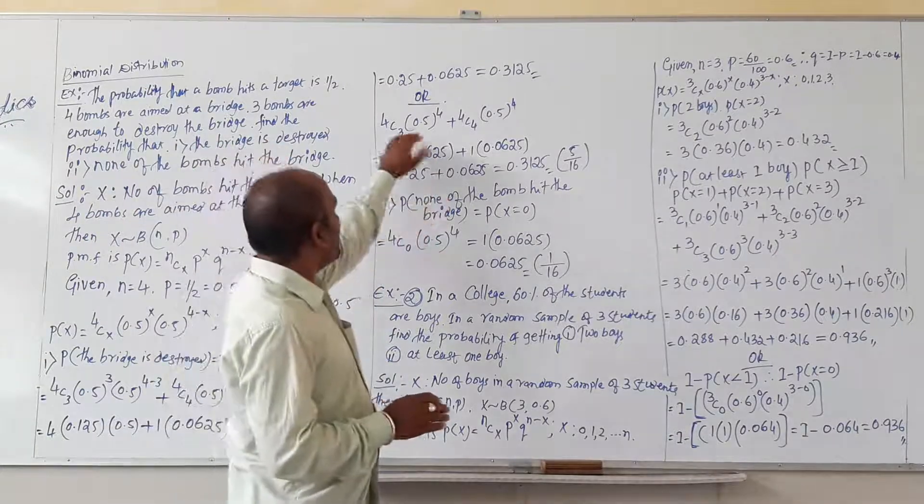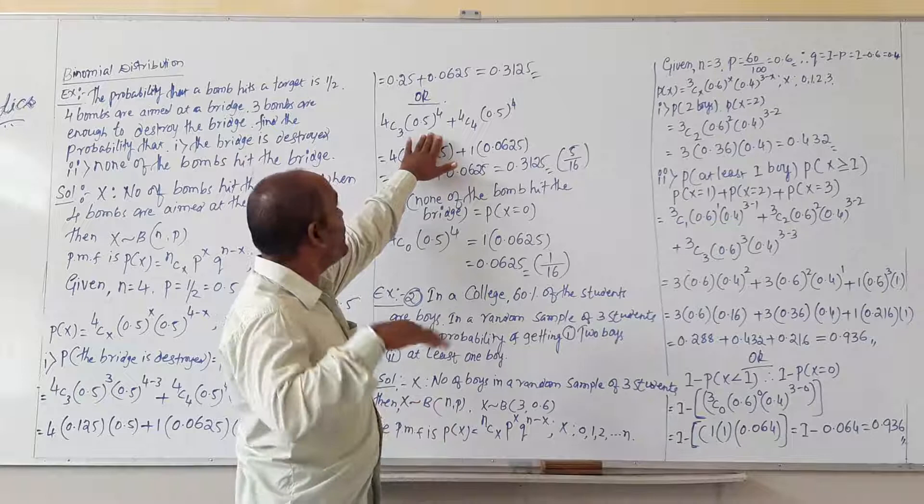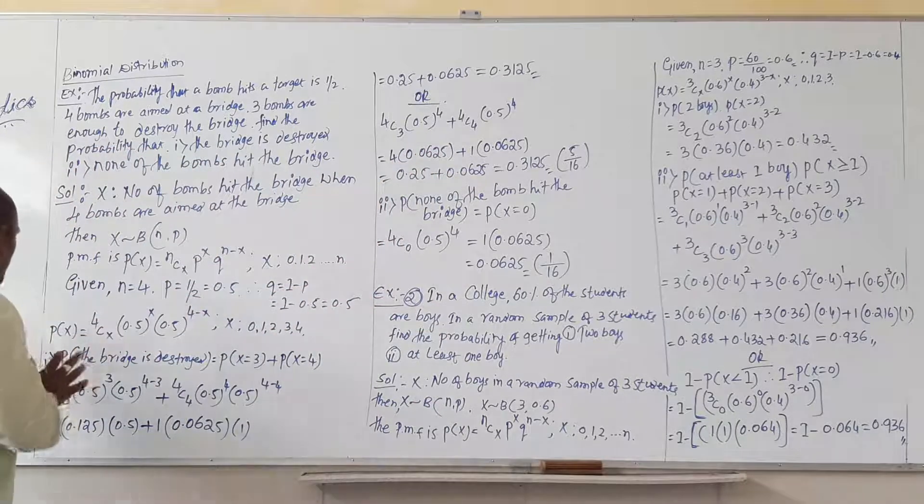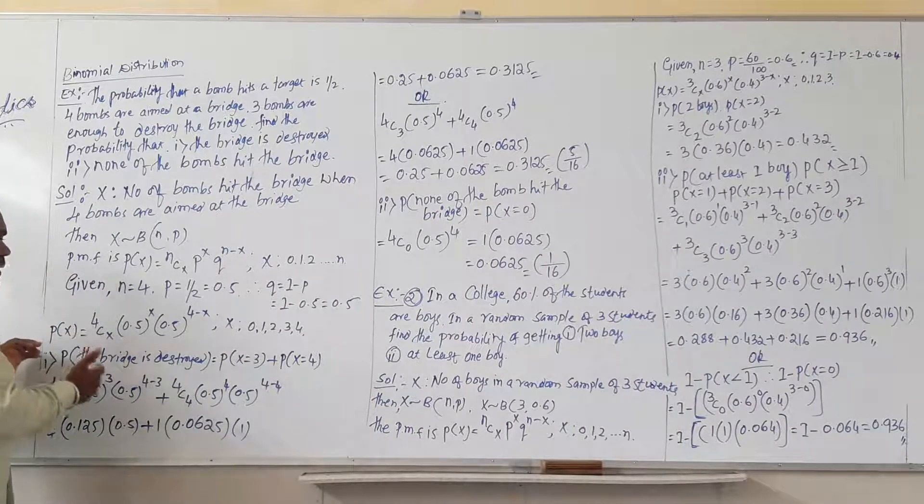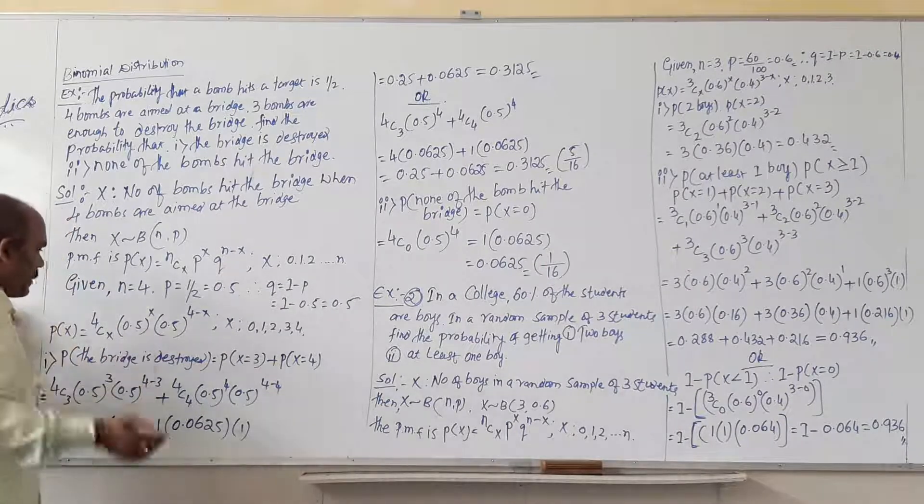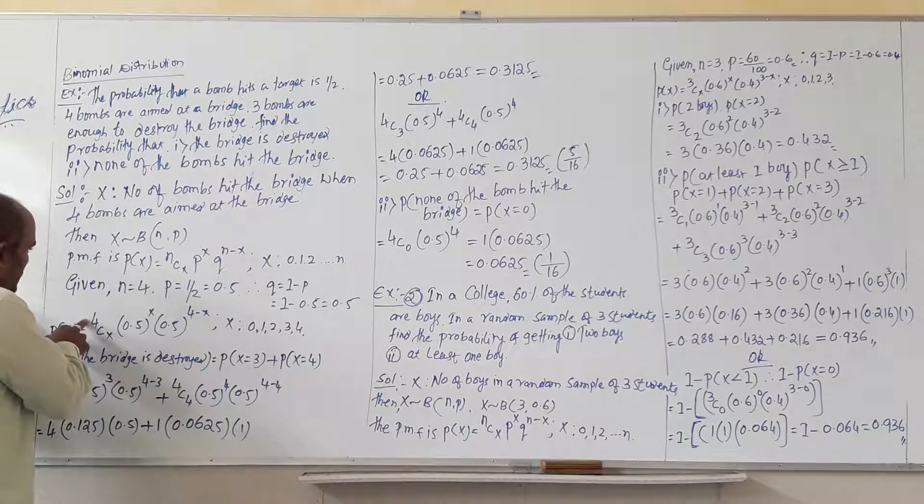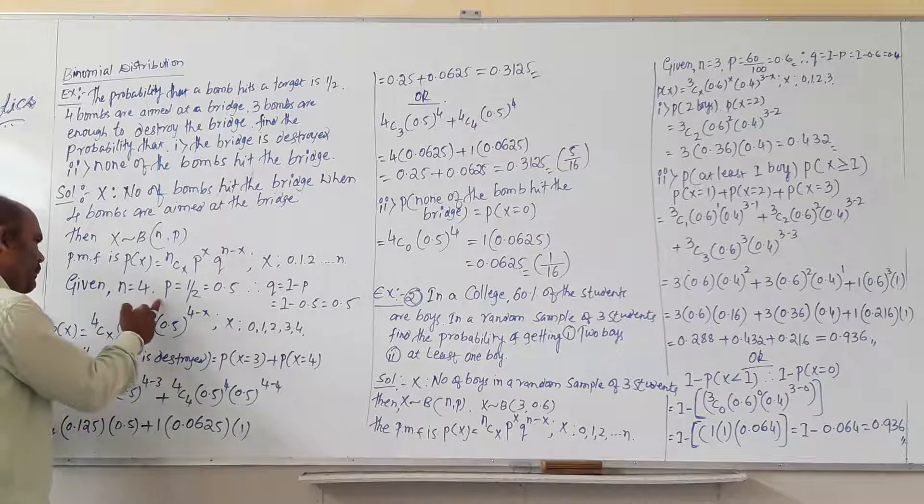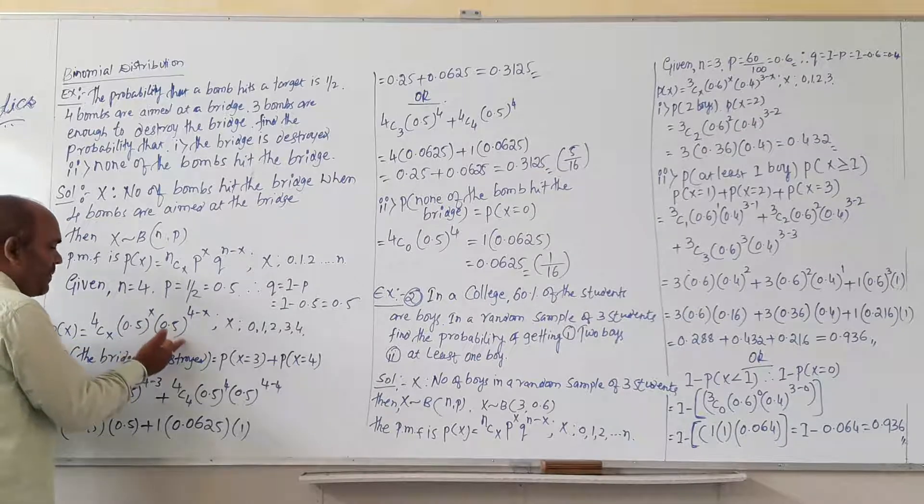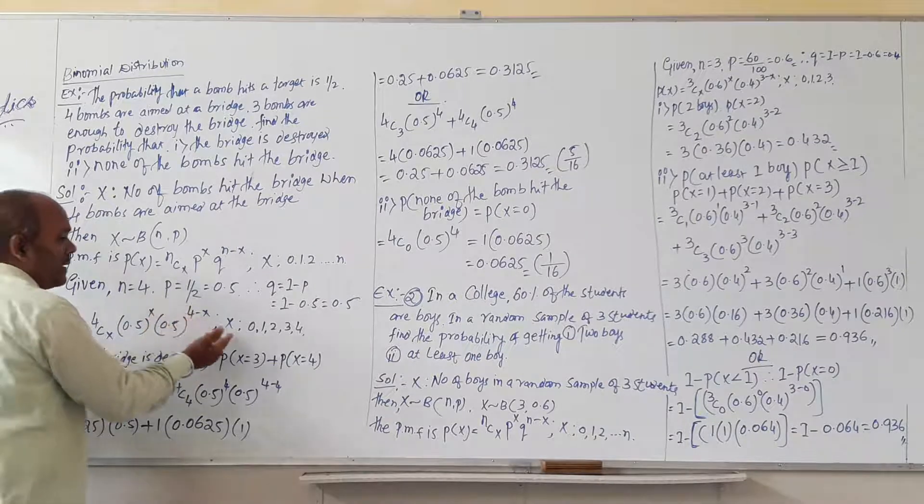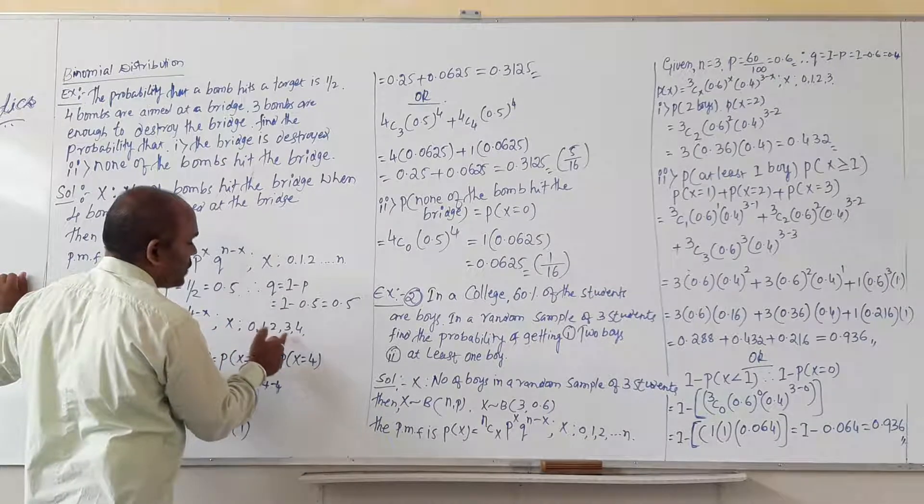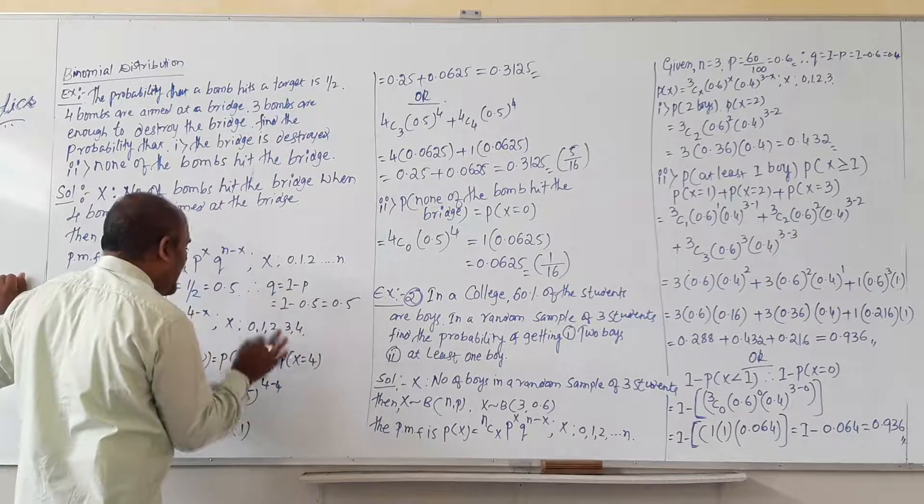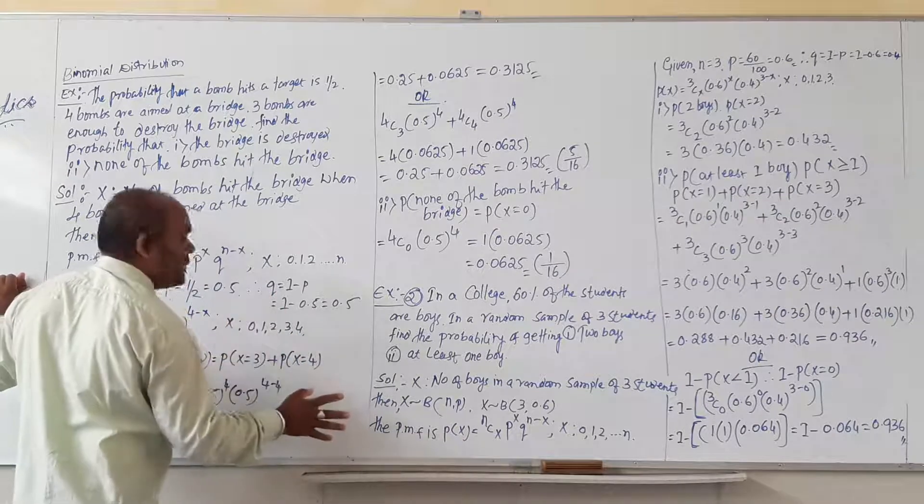I will explain you that concept later, how we have to take the x value in this moment. Then we have to put the x value after calculation. Then small n means 4Cx, p is 0.5 raise to x, and q is also 0.5 raise to 4 minus x. The value of x is 0, 1, 2, 3, 4. It means up to 4 we can take x value, not more than 4.